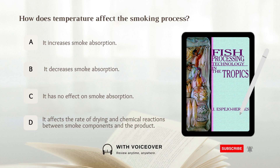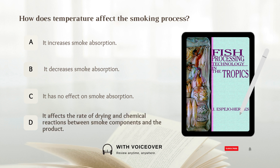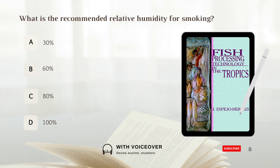How does temperature affect the smoking process? Answer: It affects the rate of drying and chemical reactions between smoke components and the product.